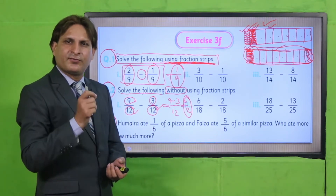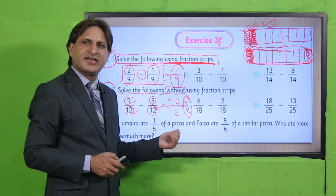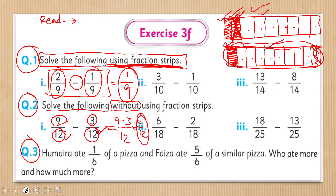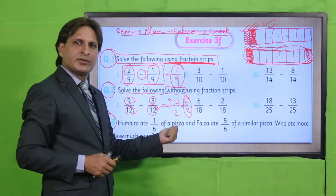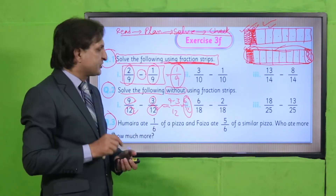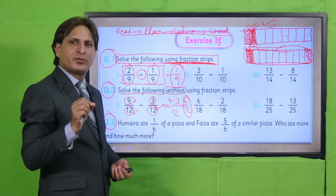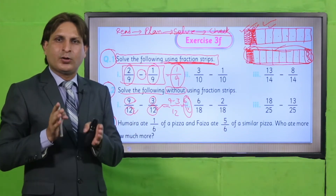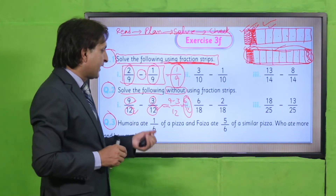अब Question Number 3 آएं — यह word problem है। Word problem के लिए जो methodology मैंने बताई है वही use करें: four steps — Read, Plan, Solve, and Check your solution। इन steps को follow करें। Word problem को बार बار पढ़ें जब तक समझ न आए, फिर given facts write करें, फिर required facts देखें, और उसके बाद subtract करें।